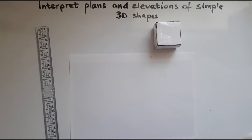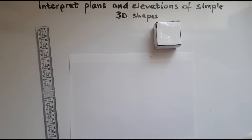In this video we'll learn to interpret plans and elevations of simple 3D shapes. We'll start with a cube, then we'll look at a cuboid, a prism, a square base pyramid, a triangular base pyramid, and a cylinder.